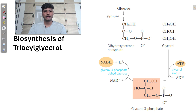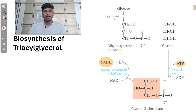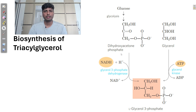We already know the formation of fatty acid, so let us understand how glycerol is formed. Glycerol is basically formed from one of the intermediates of glycolysis. In glycolysis, glucose is broken down in a stepwise manner, and one of the intermediates is DHAP — DHAP stands for dihydroxyacetone phosphate.